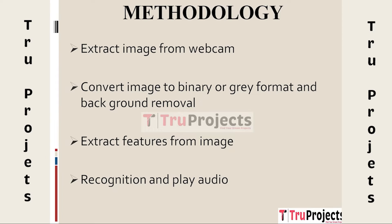The third module is Extract Features from Image. This step involves analyzing the processed grayscale or binary image to extract relevant features that help the model differentiate between different hand gestures. These features could include edges, contours, shapes, and patterns present in the image. These features form the input that the machine learning model — specifically the convolutional neural network (CNN) — uses to make predictions. The fourth module is Recognition and Play Audio.